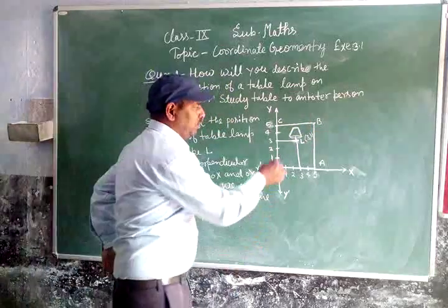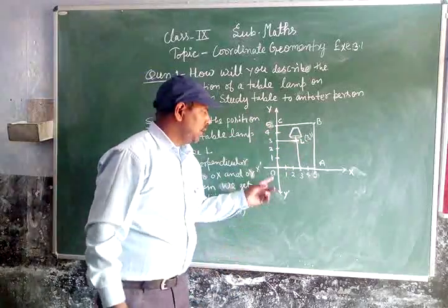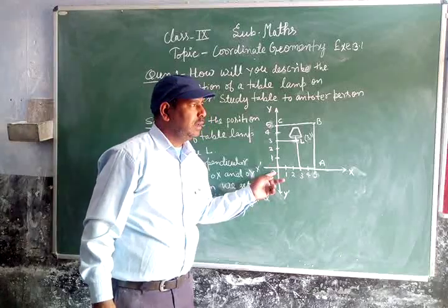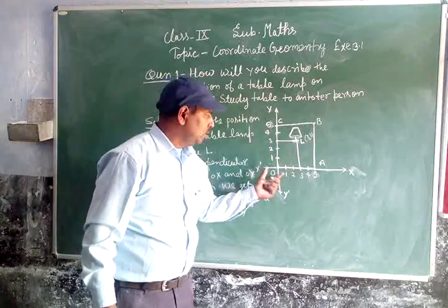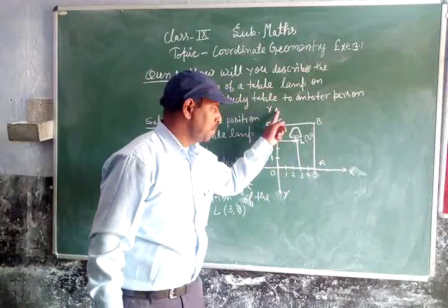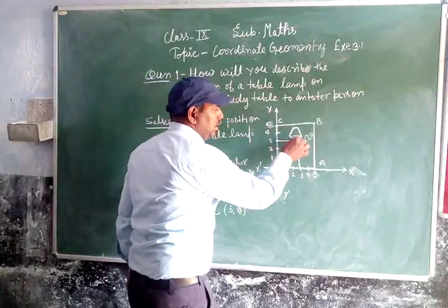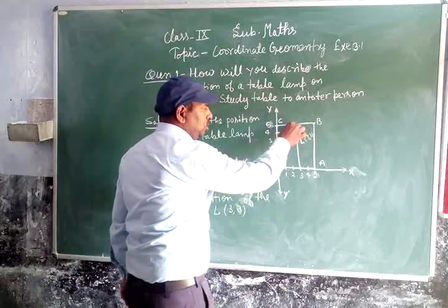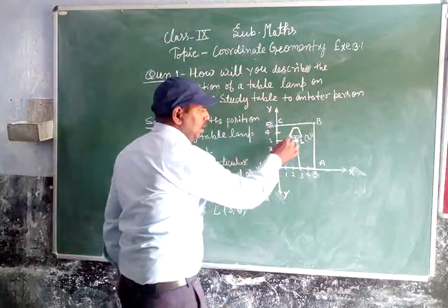The position of the lamp — in coordinate geometry, we can draw two axes and locate a point. Suppose N is the position of the hand and L is the position of the lamp.